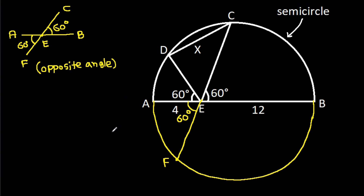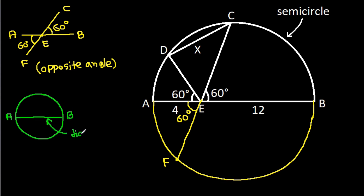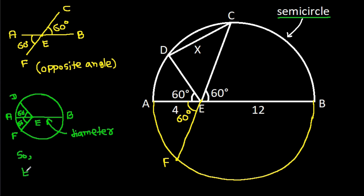Now we have a circle, and AB will be the diameter because it is a semicircle. From point E, ED is at an angle of 60 degrees and EF is at an angle of 60 degrees. So ED will be equal to EF by symmetry.